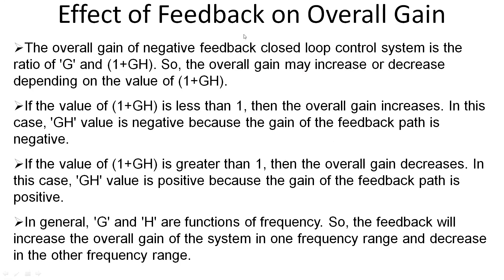Regarding the effect of feedback on overall gain, it all depends on the denominator 1 + GH. The overall gain of a negative feedback closed-loop control system is G / (1 + GH). Naturally, the overall gain may increase or decrease depending on 1 + GH. If 1 + GH is less than 1, the overall gain increases — meaning GH is negative. If 1 + GH is greater than 1, the overall gain decreases — meaning GH is positive. Since G and H are both functions of frequency, feedback will increase gain in one frequency range and decrease it in another.